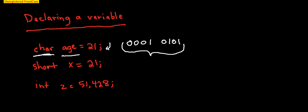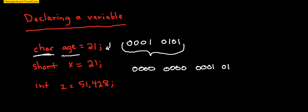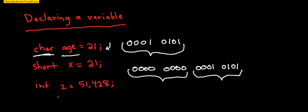If we look at the next line, we create a short, and that variable's name is x, and it's also equal to 21. The difference is a short is 2 bytes. So the number that will be saved in the computer will be 0,0,0,0,0,0,0,0,0,0,0,0,1,0,1. This is 2 bytes. When you're creating the variable, you have to tell the computer how many 1s and 0s you're using to represent your number, so that when it saves it in memory, it knows how much space to allocate.